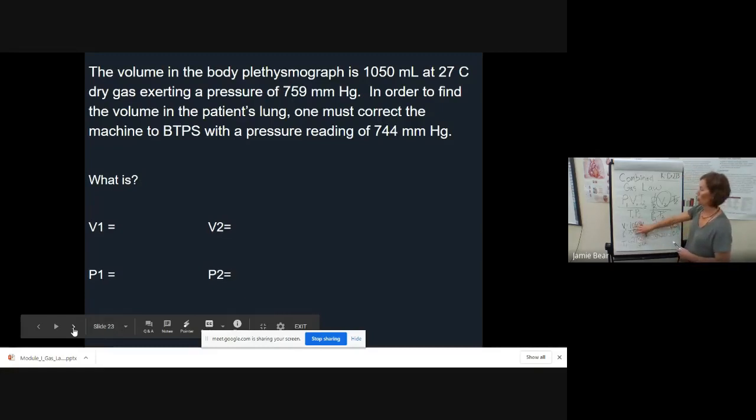Now we're going to take all these numbers and put them into this equation. If you just stay very organized and write down what your variables are and then plug and chug into this equation, you should get the right answer. Let's look at P1, 759, times V1, 1050, times T2, 310, divided by T1 at 300, and P2, which is our 697.